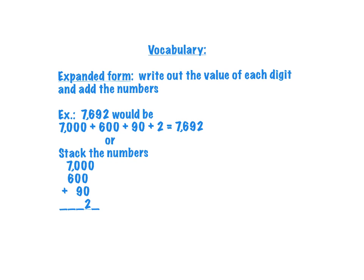Our vocabulary today is basically two words, expanded form. An expanded form is when we write out the value of each digit and then add the numbers. So a couple of ways you can do that. If you take a look at the first example that I have here, we have the number 7692.